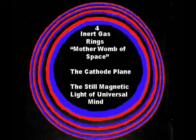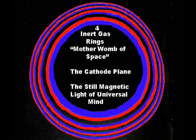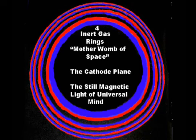The four inert gas rings contain within them all nine inert gases of the spiral periodical table of the octave wave of elements. They are the foundations for all elements. These inert gas rings are two-dimensional planes which bound the dimensionless magnetic cathode plane of the nine cube faces. The inert gas rings as pictured here represent them in their cathode condition of maximum expansion, being centered by the mother womb of cold still space.